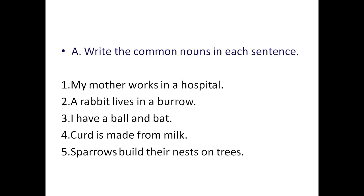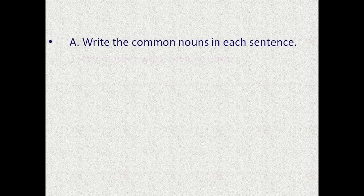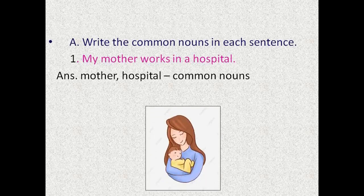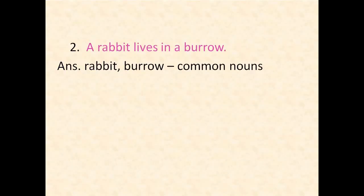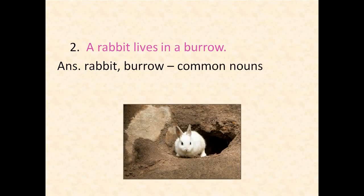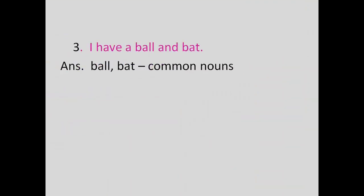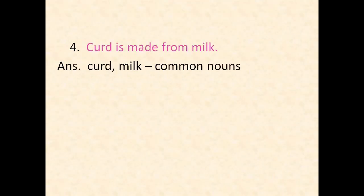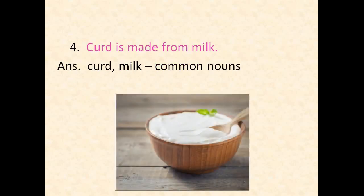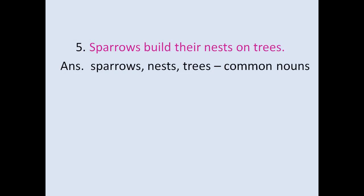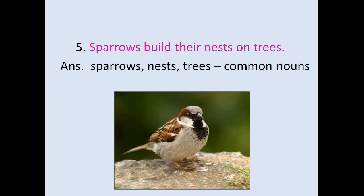Now let us write the Common Nouns in each sentence. 'My mother works in a hospital.' The Common Nouns are mother and hospital. 'A rabbit lives in a burrow.' Rabbit and burrow are Common Nouns. 'I have a ball and bat.' Ball and bat are Common Nouns. 'Curd is made from milk.' The Common Nouns are curd and milk. 'Sparrows build their nests on trees.' We have three Common Nouns: sparrows, nests and trees.